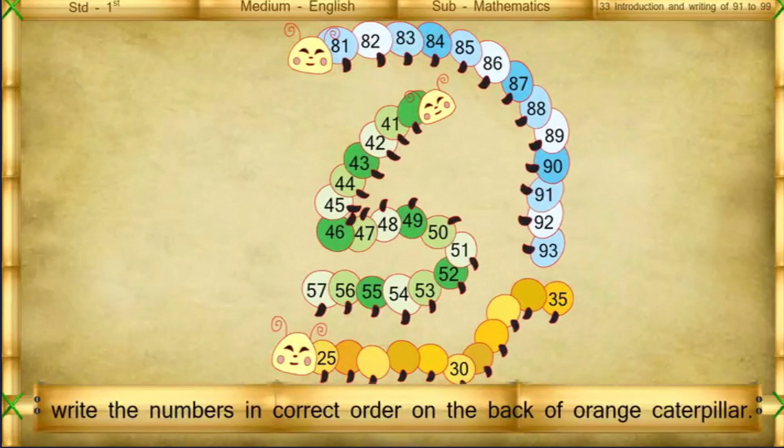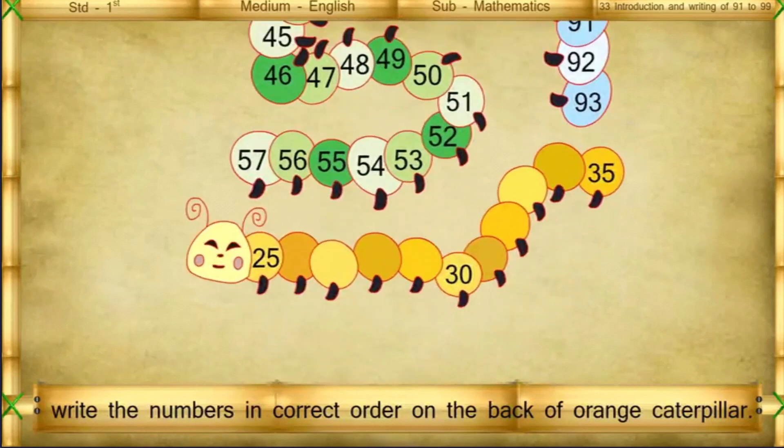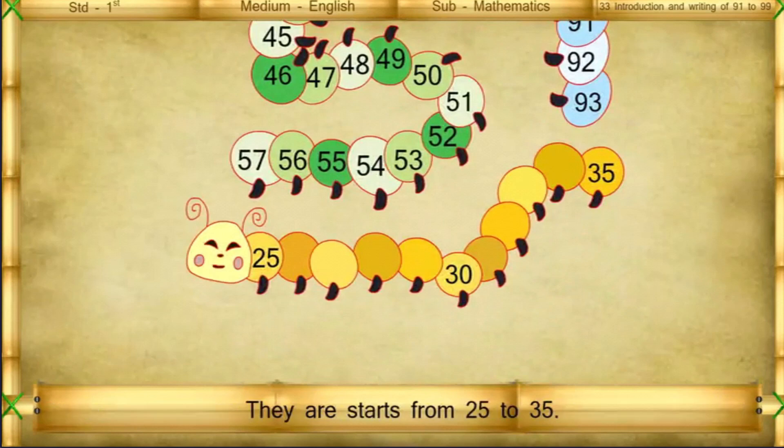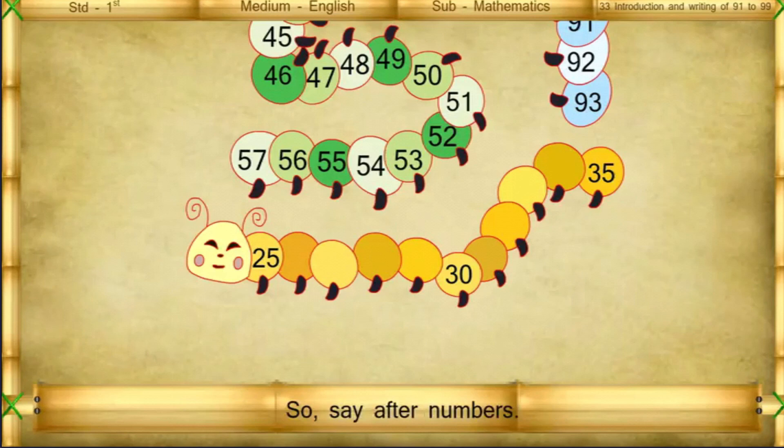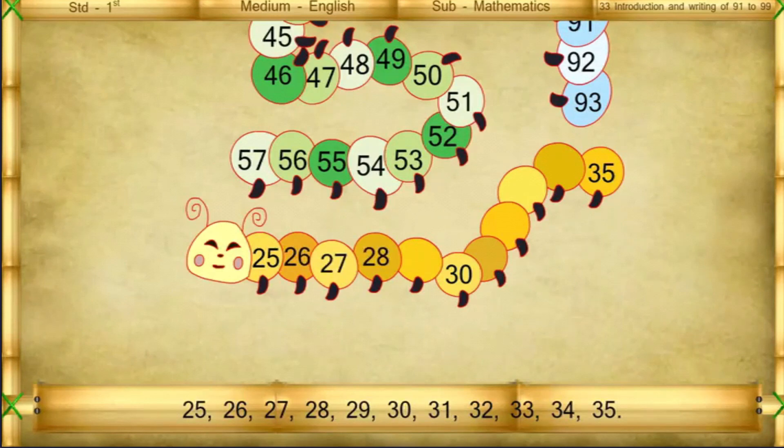Now write the numbers in correct order on the back of orange caterpillar. They start from 25 to 35. So, see after numbers. 25, 26, 27, 28, 29, 30, 31, 32, 33, 34, 35.